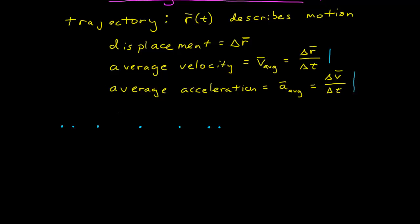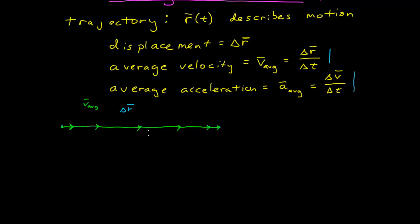I can draw position vectors simply between all of these points — they go in a line. The next thing I want to do is draw my average velocity vectors, which point in the same direction as my position vectors and go between each point of the motion diagram. The average velocity vectors point in the same direction and have different units because they're divided by the time interval between each position, but they point along the direction of the displacement.